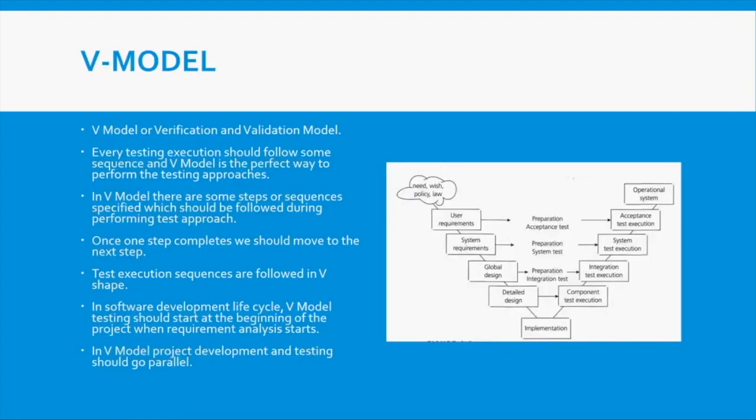The next methodology is the V-model — which stands for Verification and Validation model. In this model, every test execution should follow a specific sequence. There is a defined way to perform each testing step and each test approach. What you do in a V-model is: at the user requirements stage, you prepare a system test document in parallel.